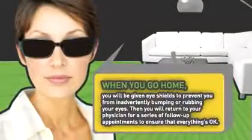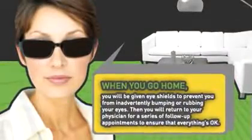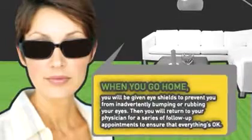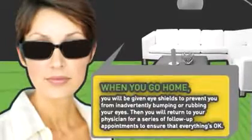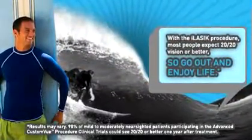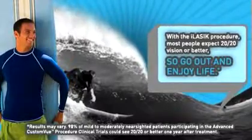When you go home, you will be given some eye shields to prevent you from inadvertently bumping or rubbing your eyes. Then you will return to your physician for a series of follow-up appointments to ensure that everything is okay. With the iLASIK procedure, most people experience 20-20 vision or better, so you can go out and enjoy life.